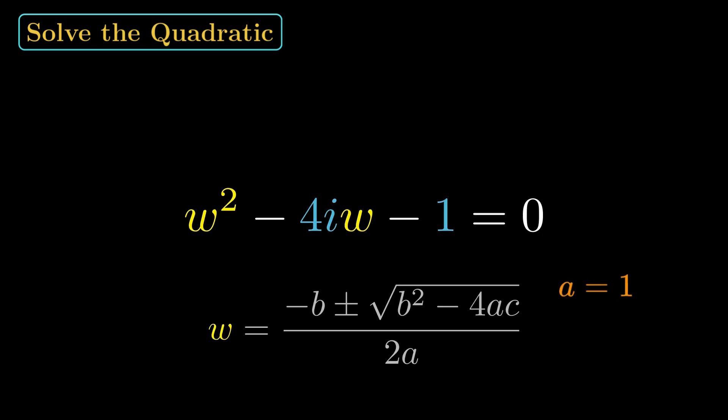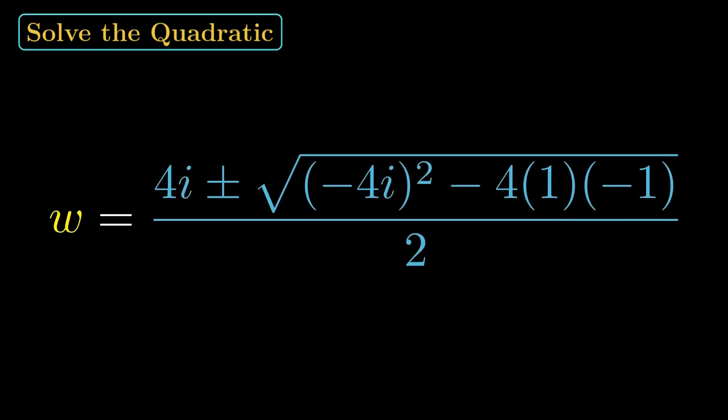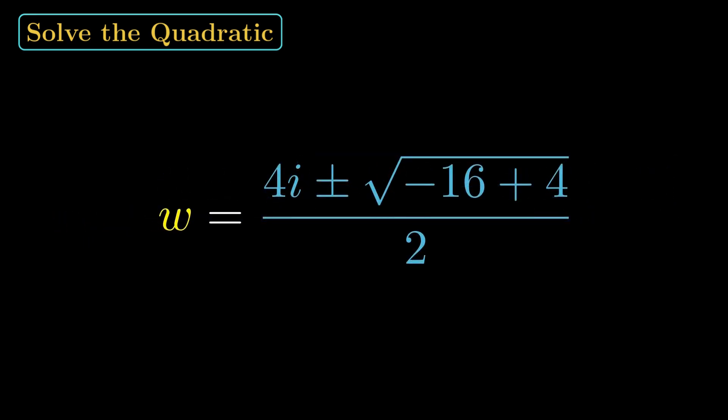Here, a is 1, b is negative 4i, and c is negative 1. Substitute w equals 4i plus or minus the square root of negative 16 plus 4, all over 2.